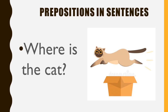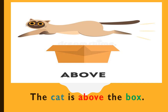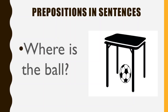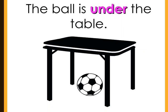Now just look at the picture and tell me where is the cat. Very good — the cat is above the box. Where is the ball? Just look at the picture and answer. The ball is under the table. See, the word 'under' is telling us about the position of the ball, so 'under' is another preposition.